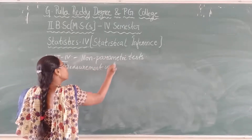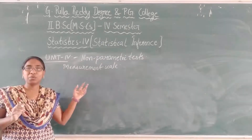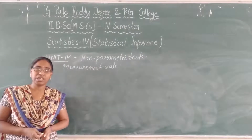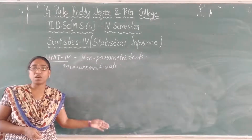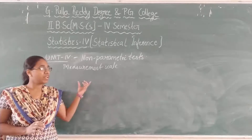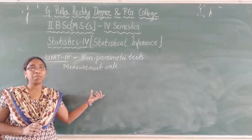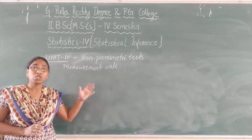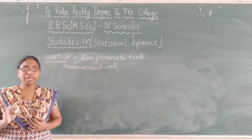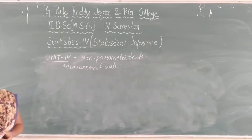We know about measurement scales — we have used them but didn't exactly know their names. In correlation, the rank correlation, we write values in an order — rank means order, and that is called the ordinal scale. If we write class intervals like 10 to 20, 20 to 30 — measuring values in a particular interval — that is called the interval scale. We will study the different measurement scales.